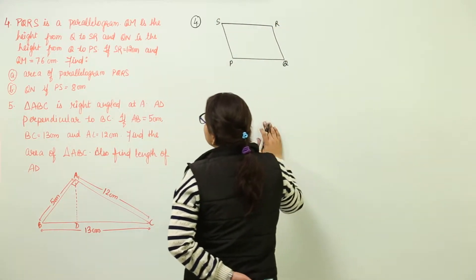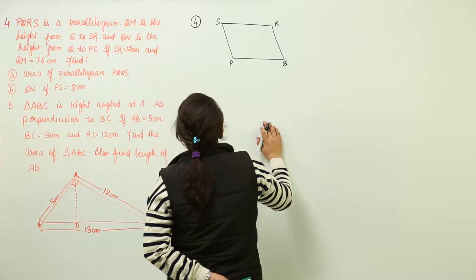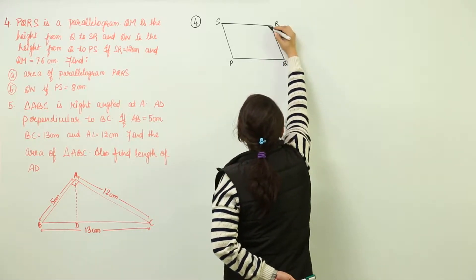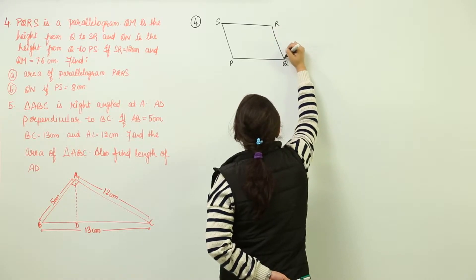We have the QM as height from Q to SR. Q to SR, we are going to draw a height that will be equal to like this.